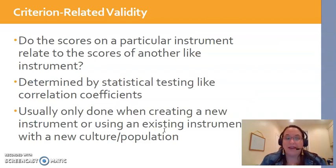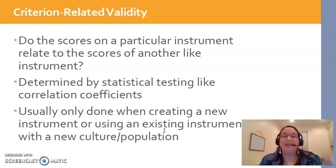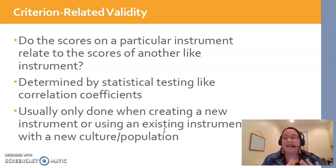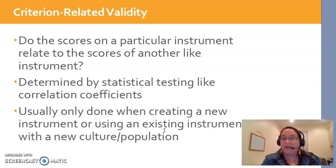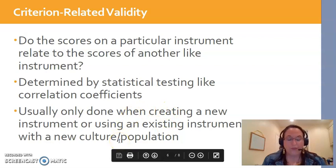The next type is criterion-related validity — taking the scores of one instrument you just created and comparing them against something else. Often you're comparing against the gold standard. Maybe it's an actual clinic visit where someone gets diagnosed by a clinician, and then you compare that against this screening tool. We're comparing it against a secondary outside criterion and doing statistical testing on this. As I've mentioned, not every time we use the tool — usually only at the beginning, or with new populations, settings, and cultures.